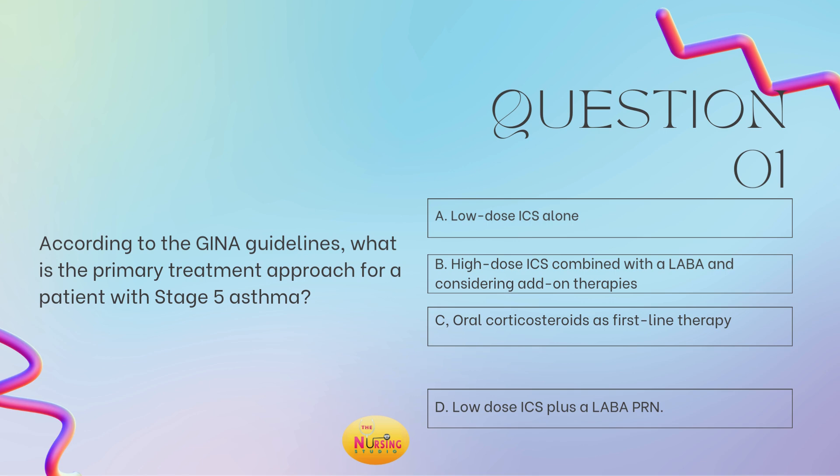Let's get into question number one. Question number one states: according to the GINA guidelines, what is the primary treatment approach for a patient with stage five asthma? Is it A, a low-dose ICS alone; B, high-dose ICS combined with a LABA and considering add-on therapies; C, oral corticosteroids as the first-line therapy; or D, a low-dose ICS plus a LABA PRN? Take a moment and tell me what you got.